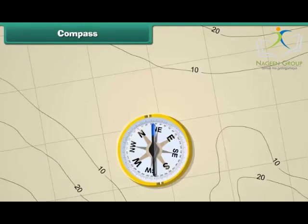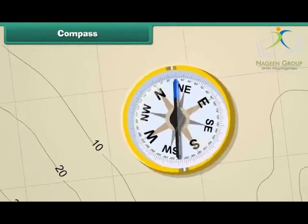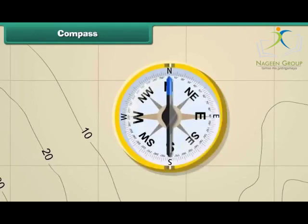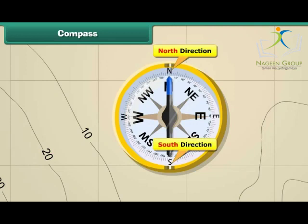Compass. This is a compass. It is a device. We use it to find directions. The compass has an arrow with a head and a tail. The head always points to the north and the tail to the south.